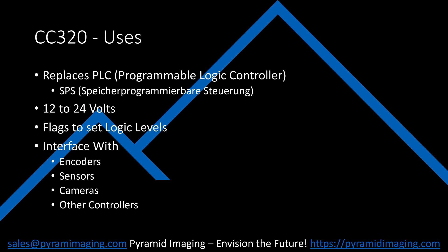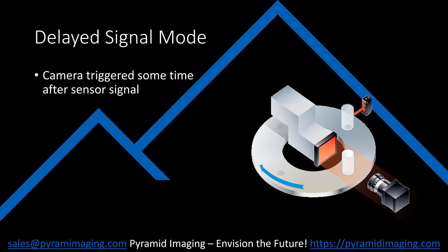Let's talk about a few scenarios where the CC320 could be helpful. When a trigger signal must be sent after some period of time when a sensor is triggered. In this image, we can see that a sensor detects the object, and then triggers the camera when it expects to have traveled in front of the camera.